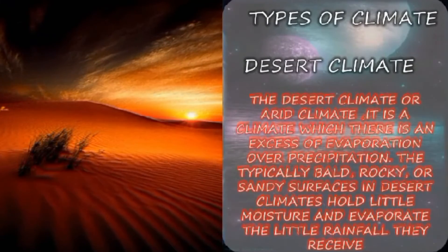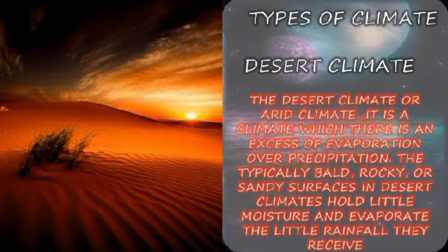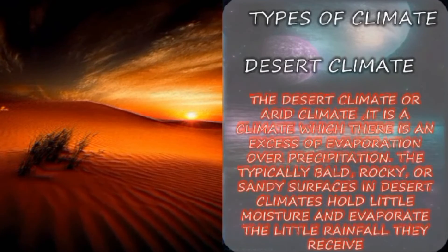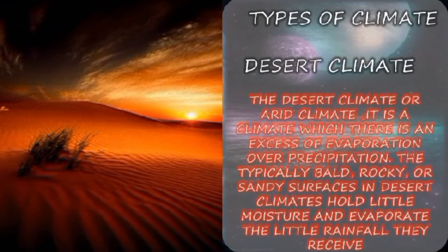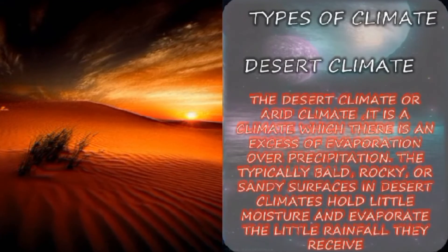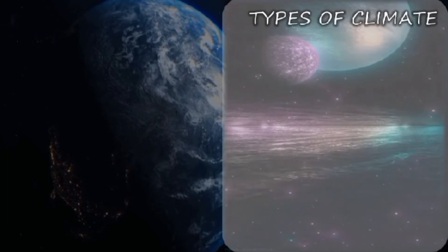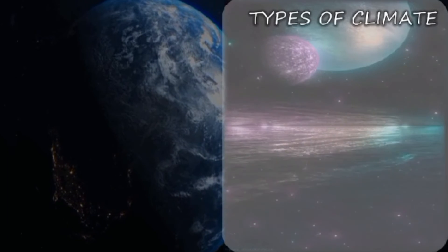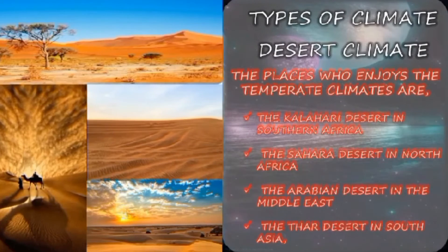Desert climate is the climate in which there is excess evaporation over precipitation. It typically has a bare, rocky or sandy surface with little moisture and low rainfall. Temperate climate is generally defined as an environment with moderate rainfall spread across the year, with sporadic droughts, mild to warm summers, and cool to cold winters. Polar climate is where the climate usually has a temperature below freezing—it is icy and covered in snow. These areas do not get direct heat or sunlight from the Sun. Polar climate regions include Canada, Greenland, Iceland, Norway, Sweden, Finland, and Russia. Every month in the polar climate has an average temperature of less than 10 degrees Celsius, and regions with polar climate cover more than 20% of Earth's area.